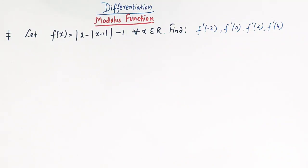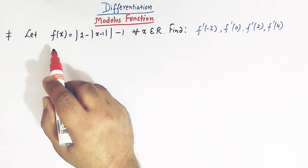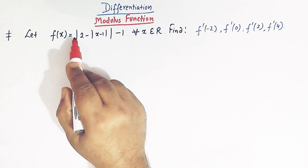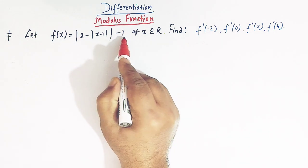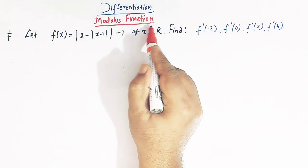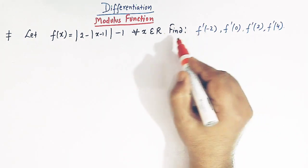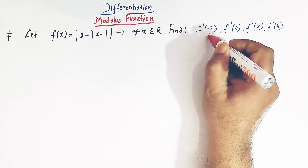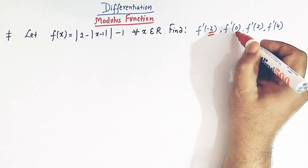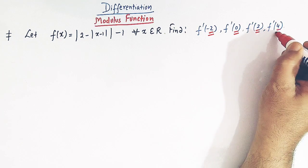Hello viewers. In today's class we are going to discuss one very important problem from differentiation involving the modulus function. Here we are given a function f(x) = |2 - |x - 1| - 1| for all x belonging to the set of real numbers. We have to find the derivative of this function at the points -2, 0, 2, and 4.